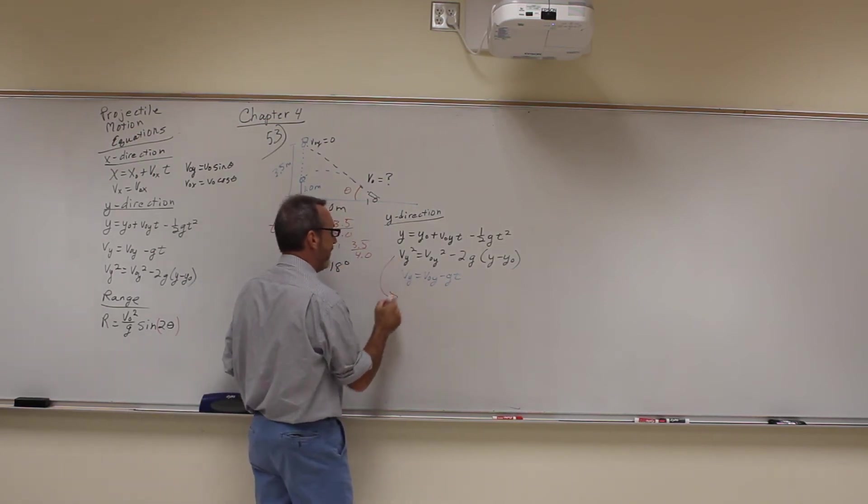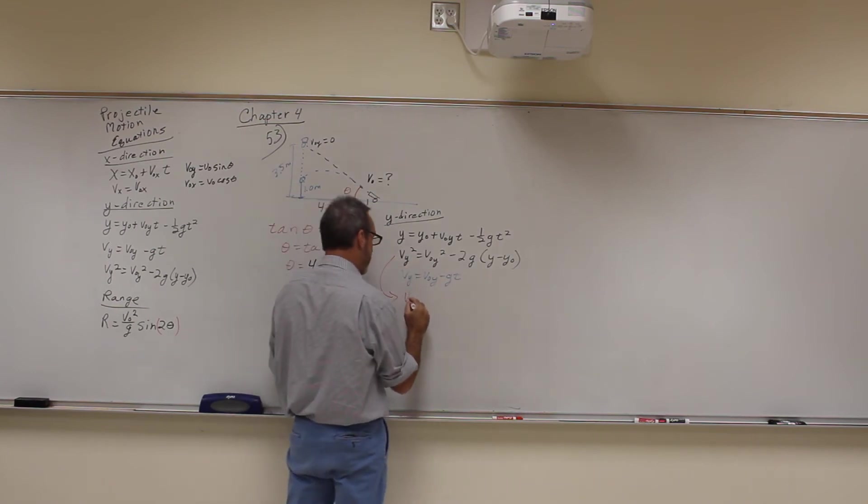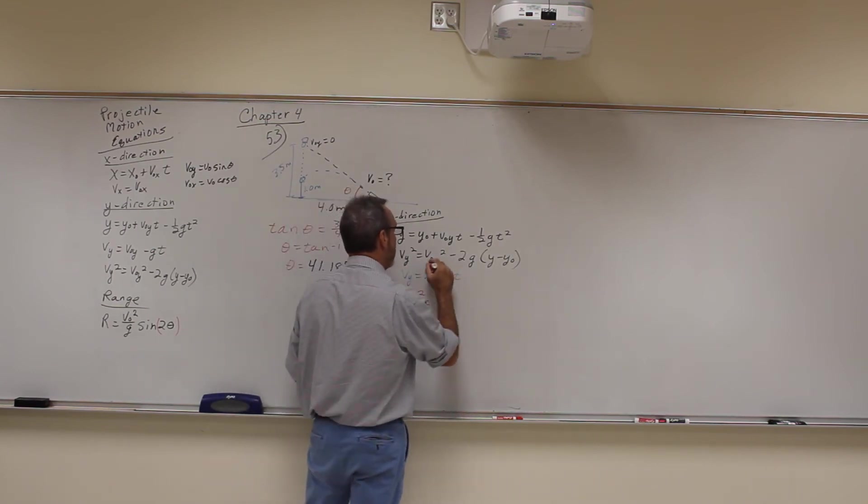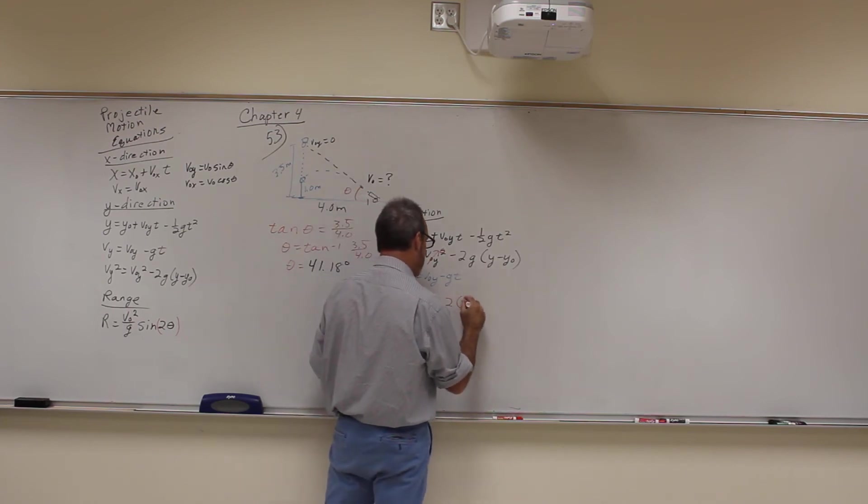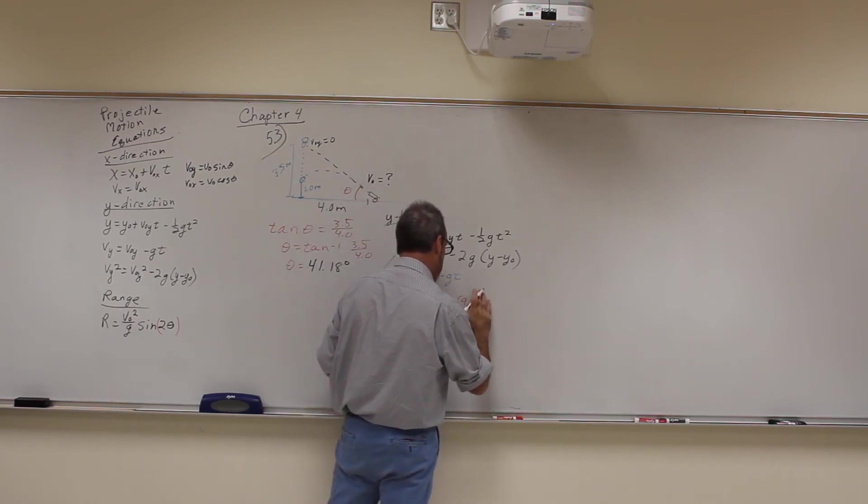Alright, so we're going to solve this one. Vy squared is what we want. So we've got Vy squared is equal to, the initial velocity is 0, so this becomes minus 2 times 9.8.